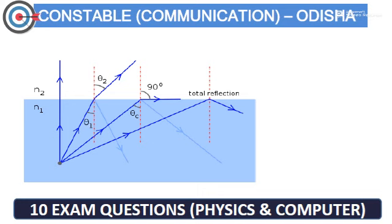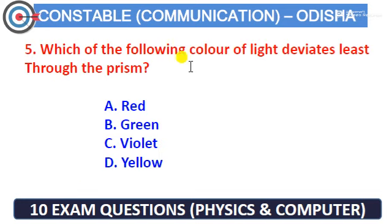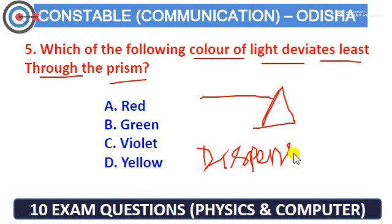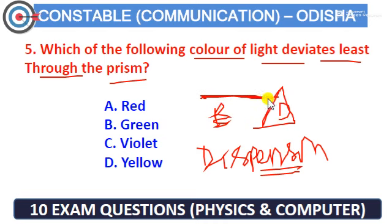The next question: what color of light is last in the list when white light is passed through a prism? This is dispersion. The refractive index for red color is the lowest. When white light is dispersed into a set of colors, red color comes last in the list.